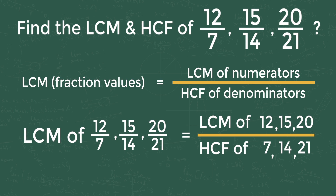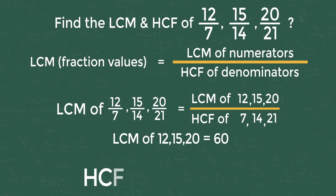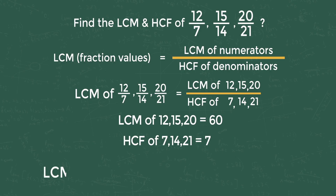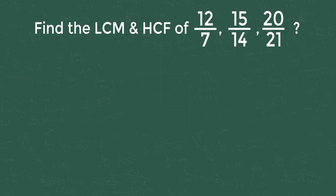LCM of 12, 15, 20 is equal to 60. HCF of 7, 14, 21 is equal to 7. So LCM of 12/7, 15/14, 20/21 equals 60 divided by 7. The answer is 60/7. This is simple if you know the trick!